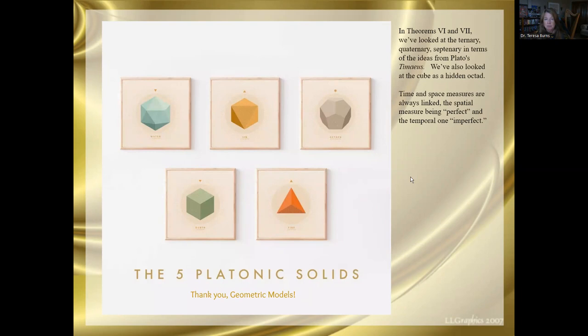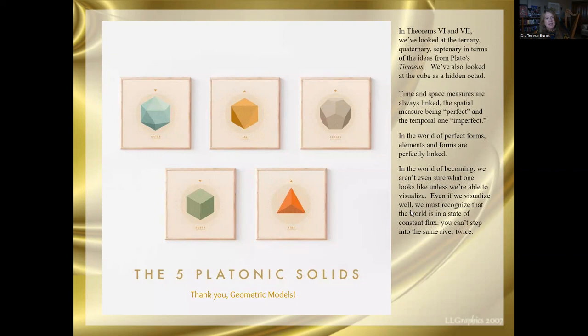Time and space measures in the Timaeus, in the world of being, are eternal, unchanging, perfect. In the temporal one, they are imperfect, and they're always changing. So in that temporal world, the world of flux, which we discussed in video seven, we may not even be sure what forms we're looking at, what elements they're made of.